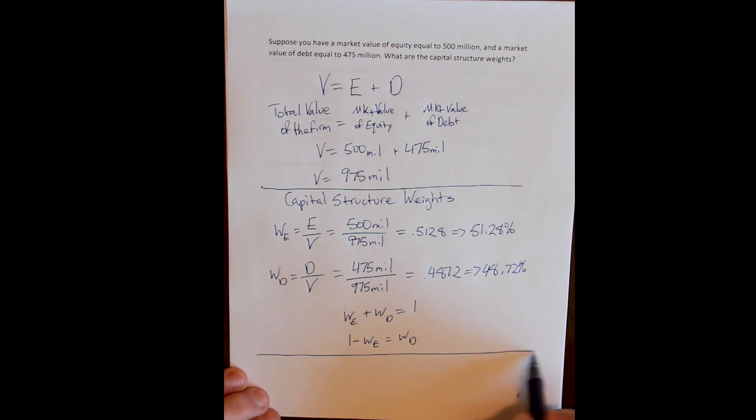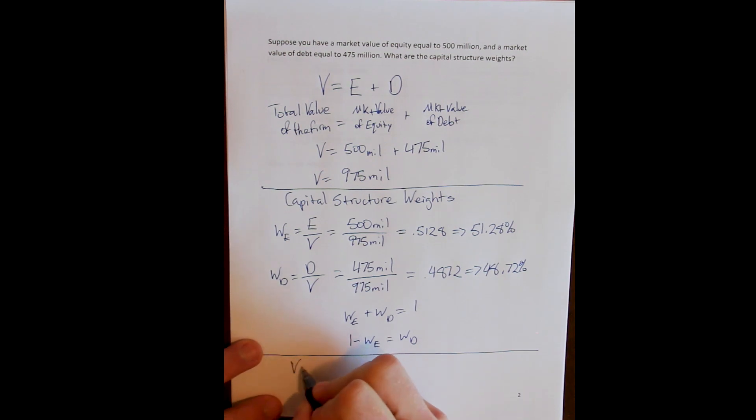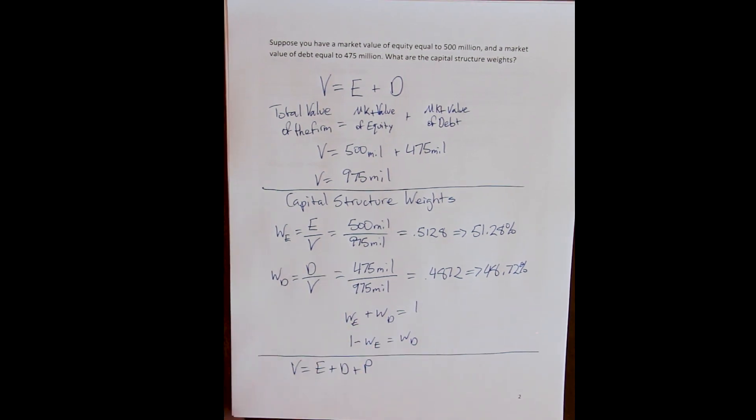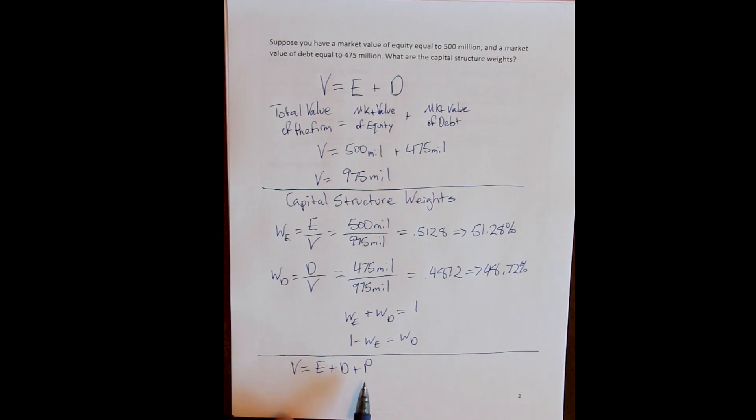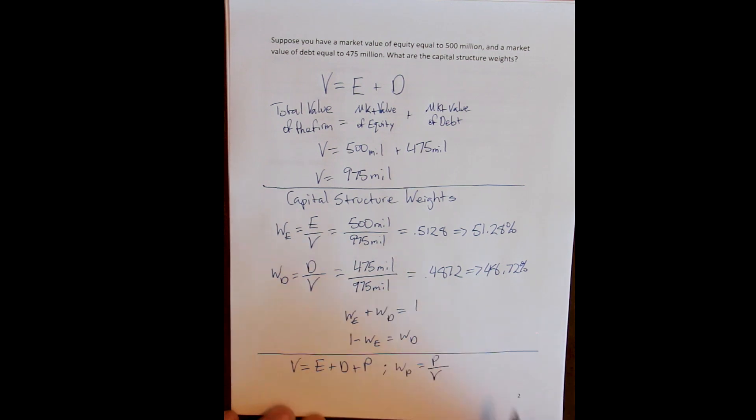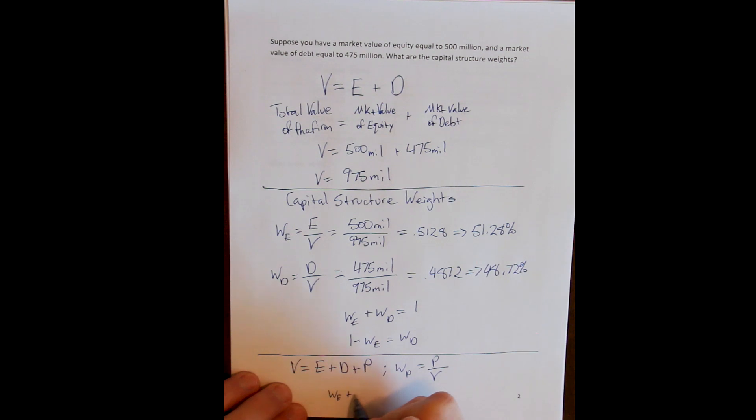Also notice that although the general structure of this is going to only include equity and debt, the value of the firm is simply the value of all its component sources of equity. So I could add a third term here for something like preferred shares and then have a weight of preferred shares being the market value of preferred shares divided by the market value of the firm, and finally have all of the firm and finally have all of those weights sum to one.